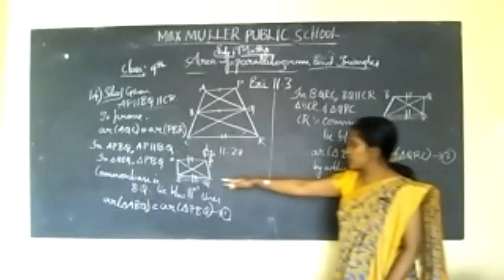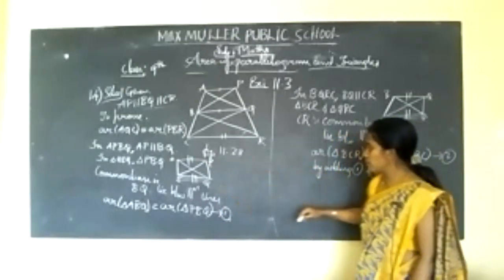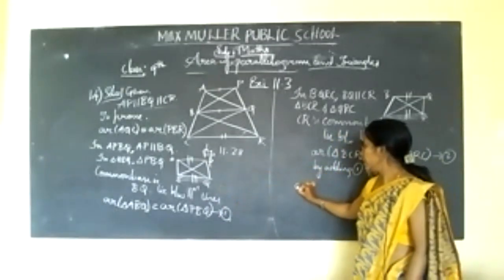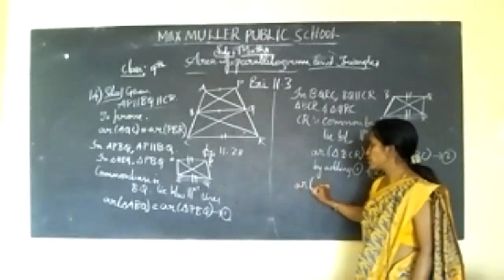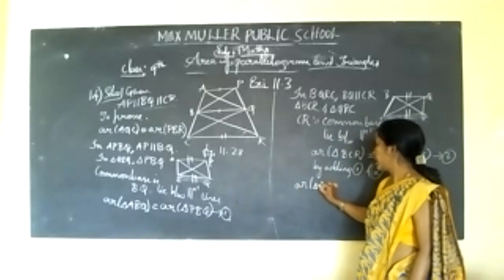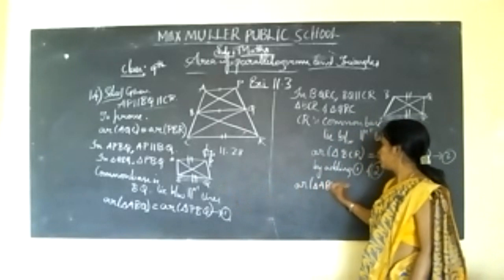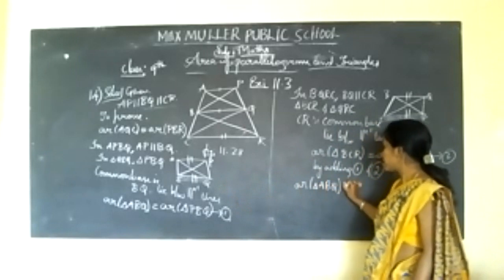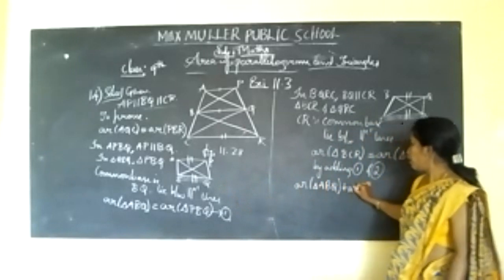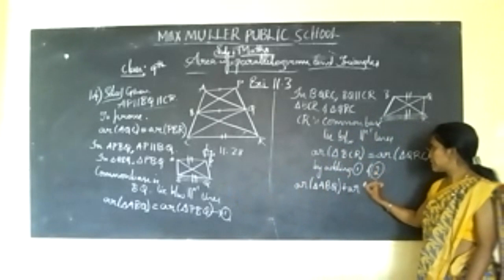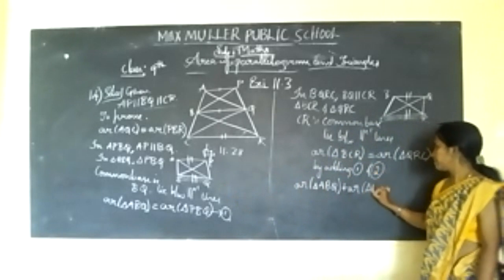So, what is the LHS in equation 1? It is area of triangle ABQ plus area of triangle BCR.